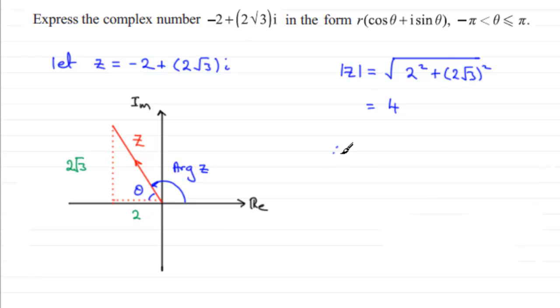And we can see that the tan of theta would be 2√3 over 2, opposite over adjacent. And so therefore theta would be equal to the inverse tan of 2√3 over 2. And if you work this out this comes to π/3 radians, the equivalent of 60 degrees if you're in degrees mode. So make sure you're in radians mode when you do the inverse tan of this value. That's theta.